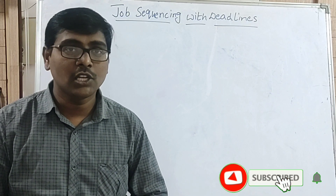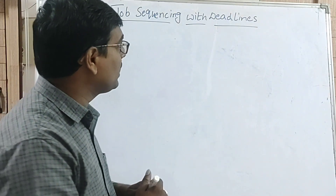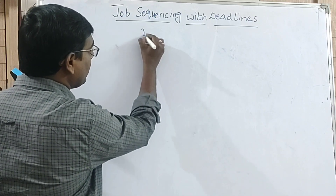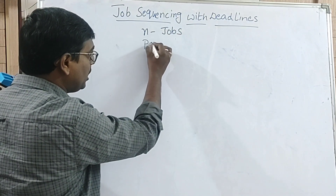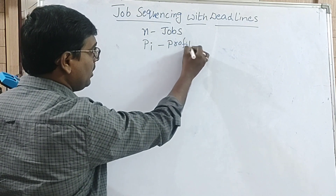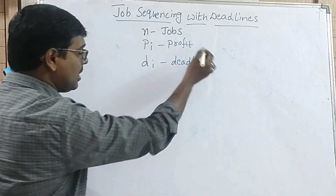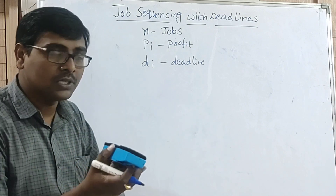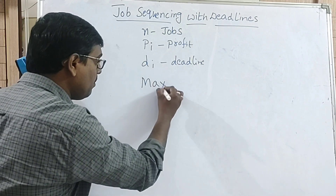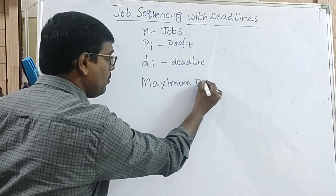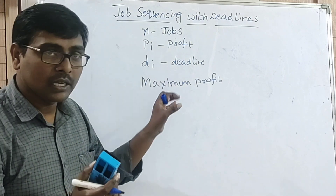Welcome to our channel. In this session we are going to discuss about job sequencing with deadline. They are given n number of jobs, each job has some profit P_i and a deadline D_i. Our aim is to execute the jobs within their deadline such that we get maximum profit.